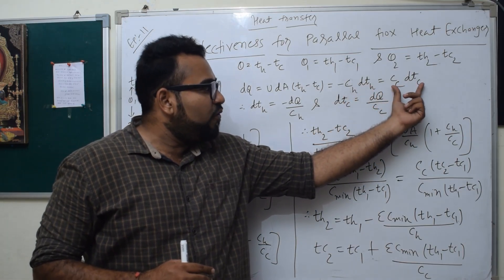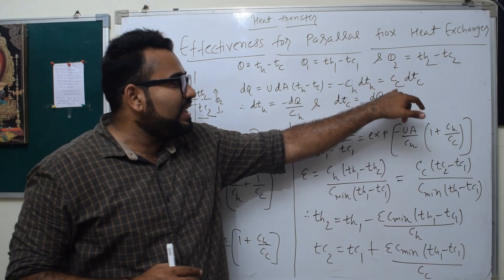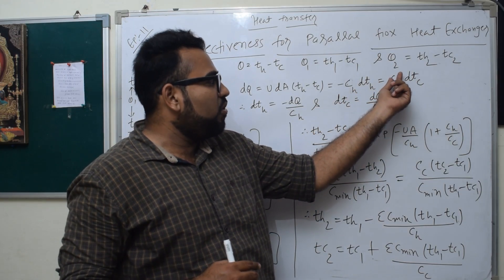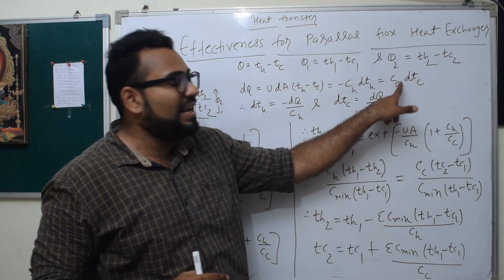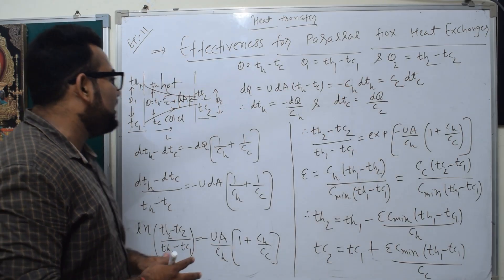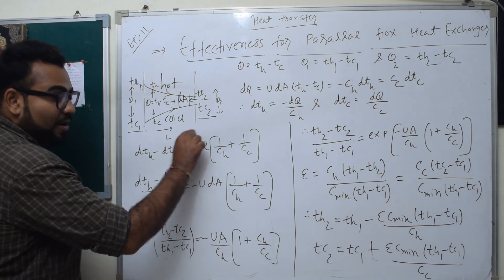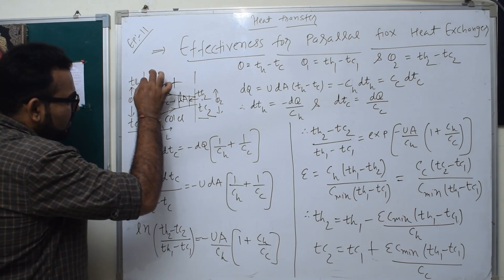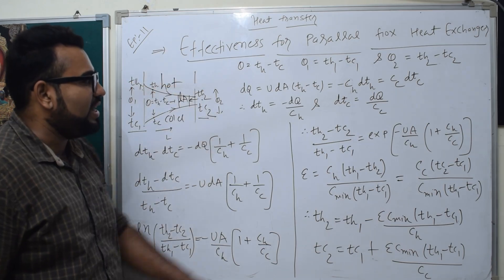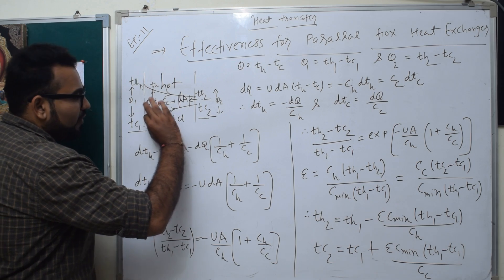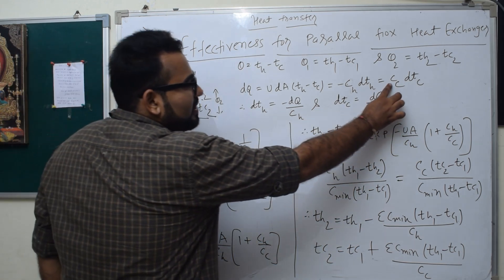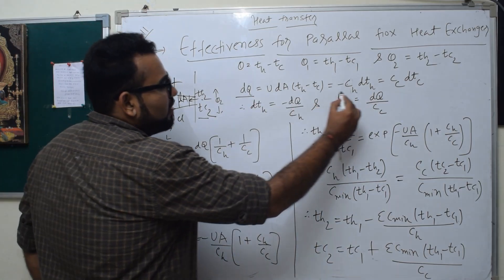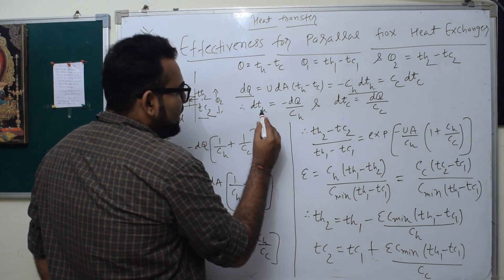Similarly, for the cold side, we write dQ equals Cc·dTc, where Cc equals mc multiplied by Cpc, the heat capacity rate of the cold fluid. Note the minus sign when moving in the length direction for the hot fluid — the temperature dTh is negative, indicating the hot fluid is losing temperature.